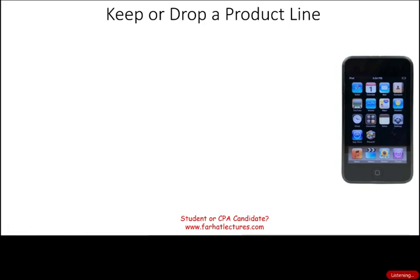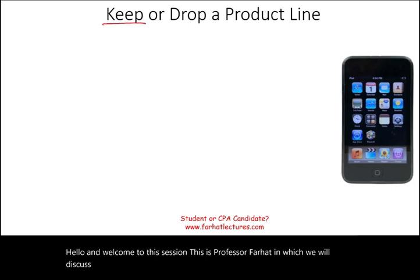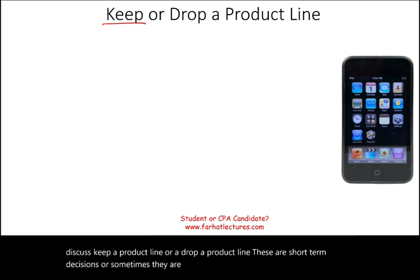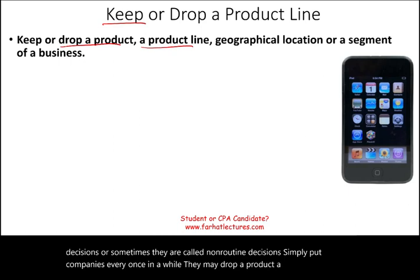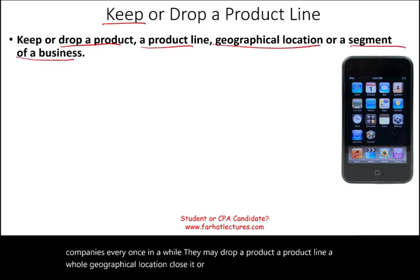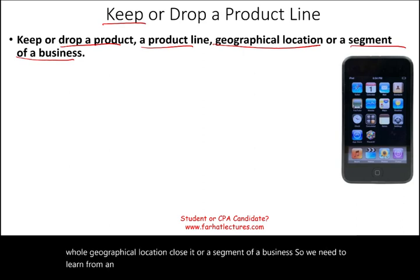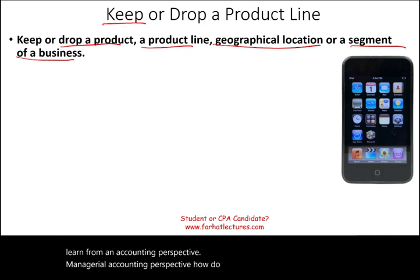Hello and welcome to this session. This is Professor Farhad, in which we will discuss keeping or dropping a product line. These are short-term decisions, sometimes called non-routine decisions. Companies every once in a while may drop a product, a product line, a whole geographical location, or a segment of a business. From a managerial accounting perspective, we need to learn how companies arrive at that decision using numbers.